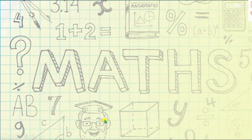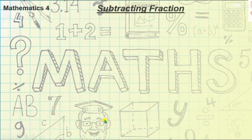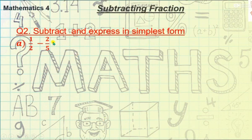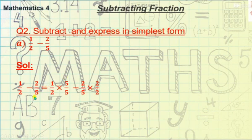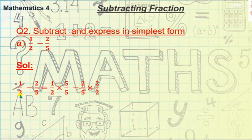Let's understand another example. Our question is: subtract and express in simplest form. Our first step is the same — we need to make the denominators the same. But here we have denominators 2 and 5. Can we make 2 into 5? Recall the table of 2 — can you get the number 5 in the table of 2?